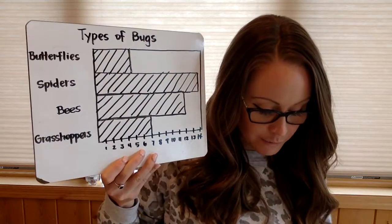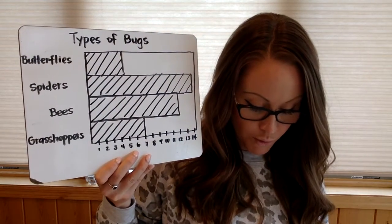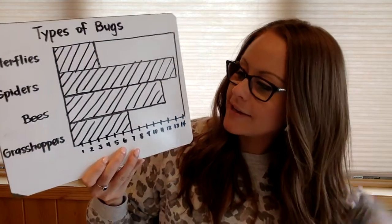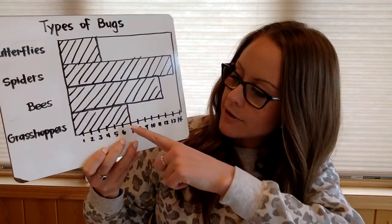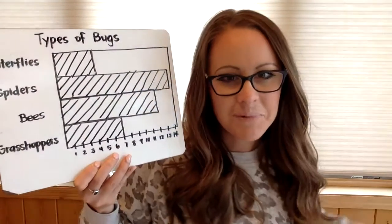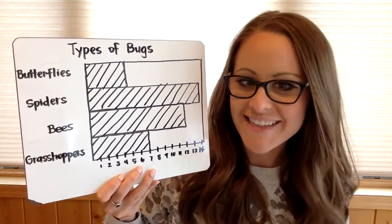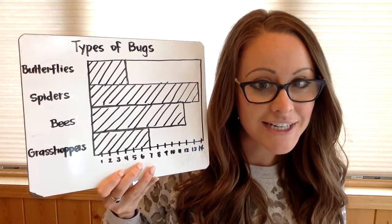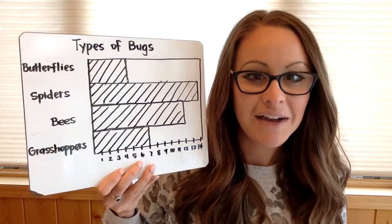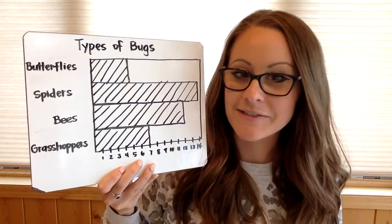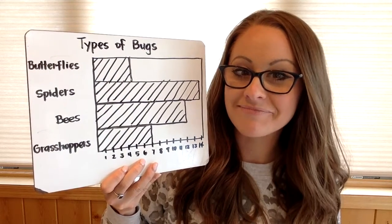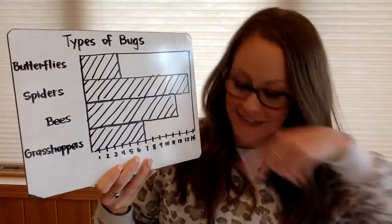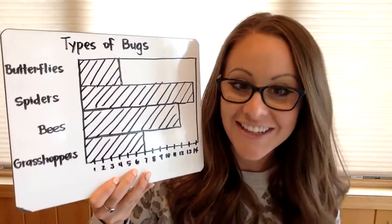Letter C: which bug was counted twice as many times as grasshoppers? Grasshoppers was 7, so what is 7 plus 7? That answer is 14 — it's a doubles fact. I wonder which one of them is 14. Spiders, right? 14. You can put that for letter C.